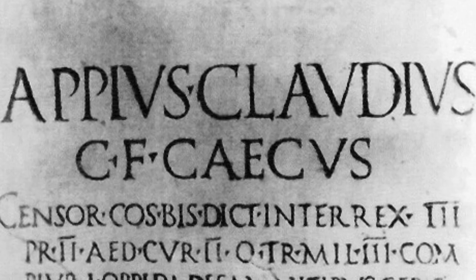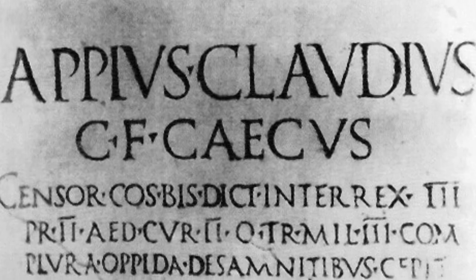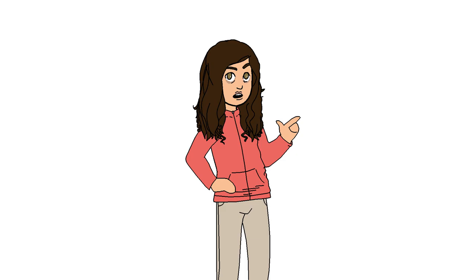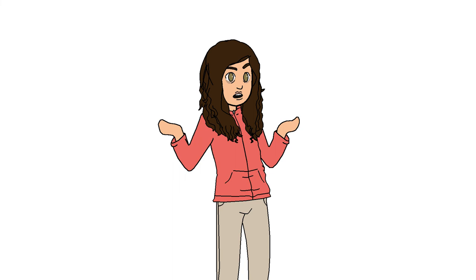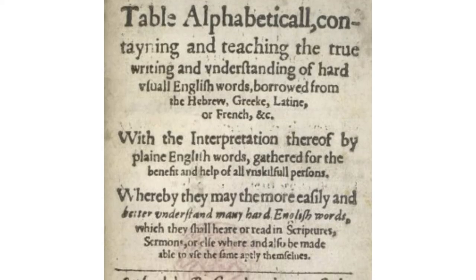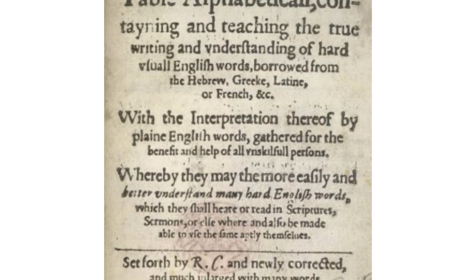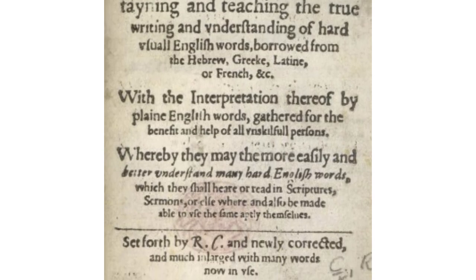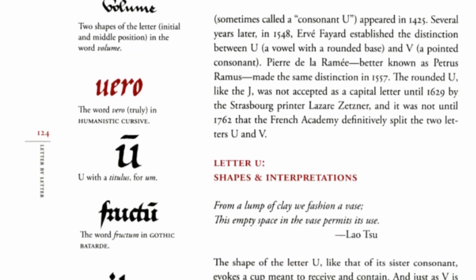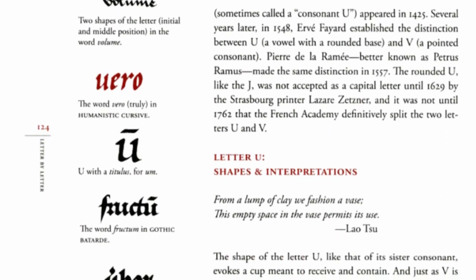Finally, we have the letter U. Traditionally, the letter V had been used as both a vowel and a consonant, serving in the roles of both the modern V and U. This didn't immediately change with the development of the letter U. Instead, the differentiation of V into a pointed and rounded form was not about pronunciation, but presentation. V was used when either sound appeared at the start of a word, while U was used later in words regardless of pronunciation. It was only between the Renaissance and the 18th century that the two became phonetically distinct and acknowledged as separate letters.